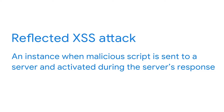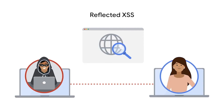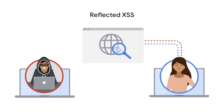A reflected XSS attack is an instance where a malicious script is sent to the server and activated during the server's response — a common example is the search bar of a website. Criminals send their target a web link that appears to go to a trusted site. When clicked, it sends an HTTP request to the vulnerable site server. The attacker's script is then returned, or reflected, back to the user's browser, which loads the malicious script because it trusts the server's response. Information like session cookies is then sent back to the attacker.